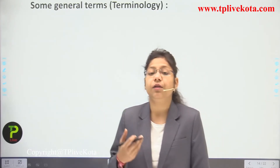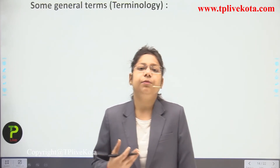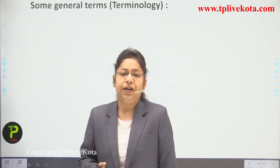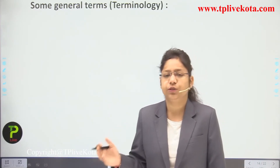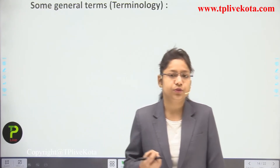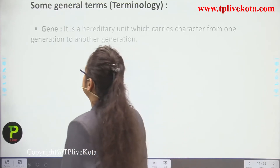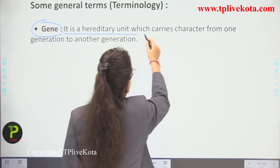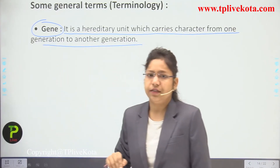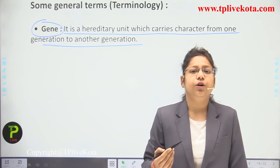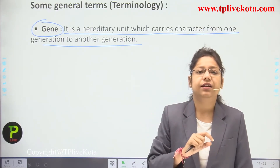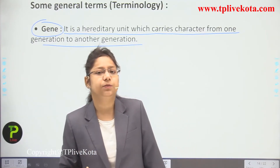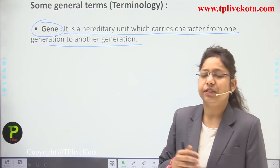Before seeing Mendel's work, let us become familiar with general terminology that will be used continuously in upcoming lectures. First, gene: it is a hereditary unit which carries a character from one generation to another. In a person, chromosomes are present; inside chromosomes, DNA material is present; and inside DNA, the gene is present — and this is carried from one generation to another. Next, allele: the term allele refers to each of the members of a genetic pair or alternate trait of a gene pair, such as XX or XY chromosomal representation.